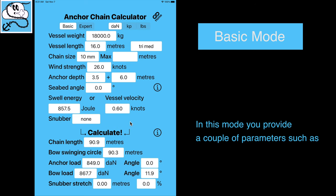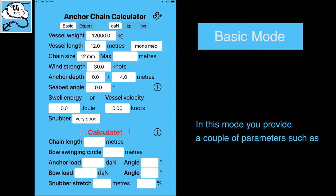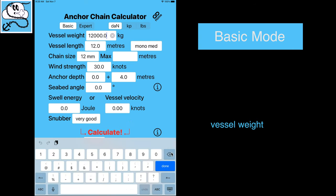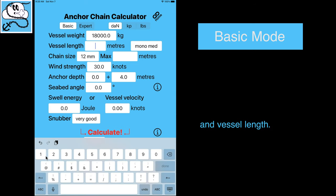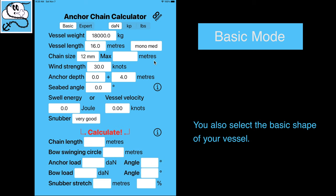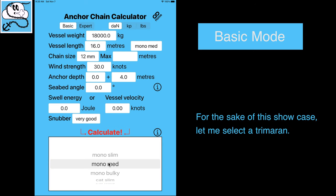In this mode, you provide a couple of parameters such as vessel weight and vessel length. You also select the basic shape of your vessel. For the sake of this showcase, let me select a trimaran.